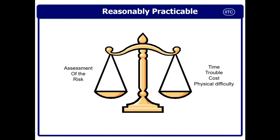You might have heard the terminology 'reasonably practicable.' Visually it is like a weighing machine which balances everything — we need to balance risk versus cost versus trouble versus time versus difficulty so that it is balanced. Risk assessment equals time, trouble, cost and physical difficulty. We will understand this when we discuss ALARP — as low as reasonably practicable. I have a training module specifically on ALARP justification which is a 15-to-20-minute session — please go through that when you have time.